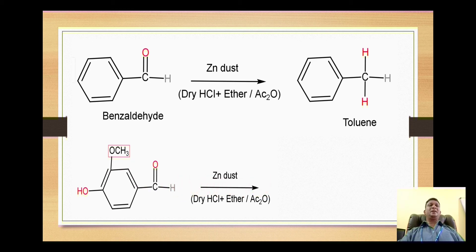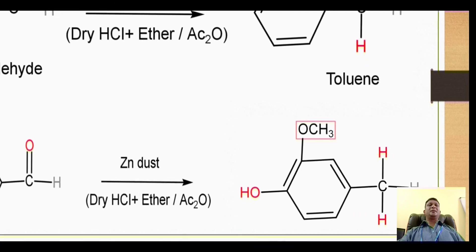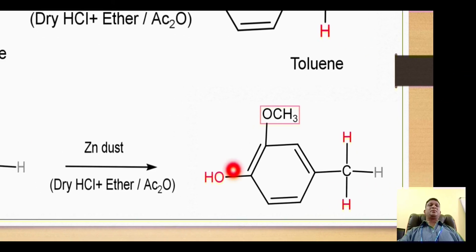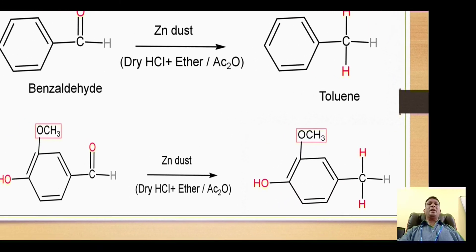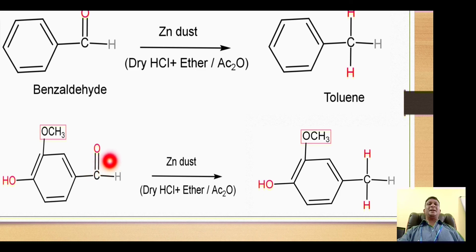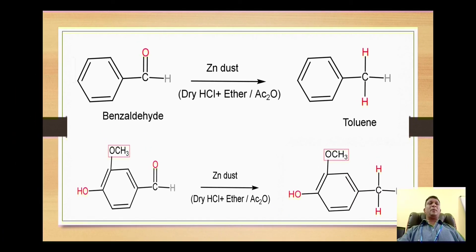Likewise, a benzaldehyde derivative — four-hydroxy-three-methoxybenzaldehyde (vanillin) — on reaction with zinc dust gives formation of four-methyl-two-methoxyphenol. Here the doubly-bonded carbonyl oxygen is replaced with two hydrogens to give the corresponding alkane portion. That is all about the Clemmensen reduction reaction. Thanks for watching the video — please like, share, and subscribe.